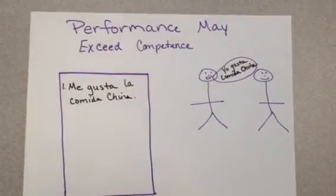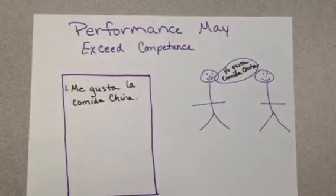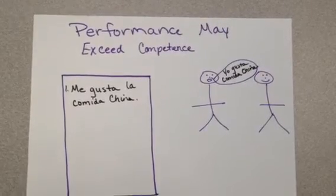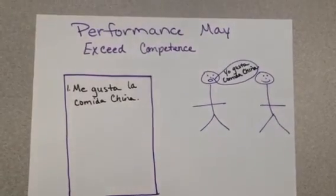Students may learn a skill and be able to perform it on a test. However, the student may not have acquired that skill and may not be able to show true competence.